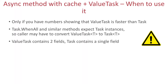Now that we know what ValueTask is, let's talk about when you should use it. Do not use ValueTask unless you have measured it and have numbers showing that your async method performs better when it returns a ValueTask. In general, scenarios where an async method is called in a tight loop and can return results synchronously most of the time — for example due to caching — are where ValueTask has potential. But do not use ValueTask by default; always measure the difference.